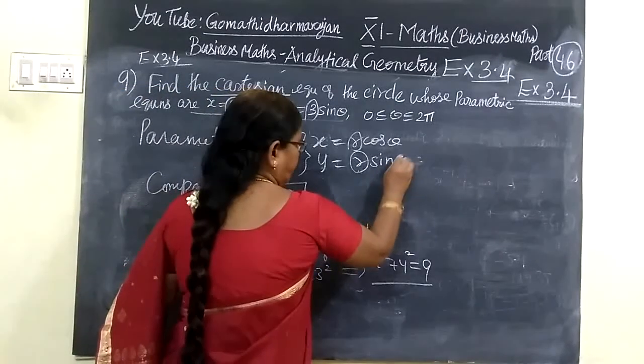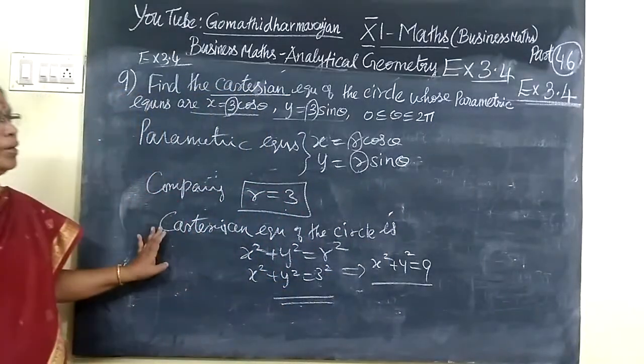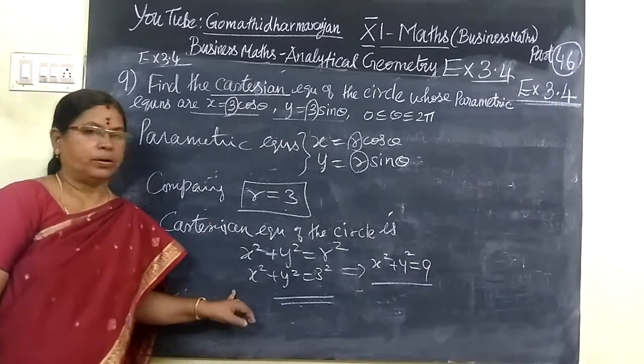So in general, this is the parametric equation. So this is the answer: x squared plus y squared equals 9 is the answer. That's it.